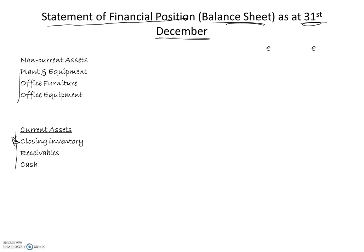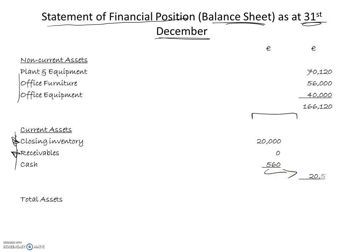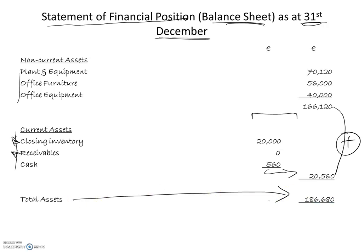All these items — the non-current assets and the current assets — are coming straight from the trial balance, with the exception of the closing inventory which is a note. I am simply going to list them, add them all up, and get a total asset figure. Plant and equipment 70,120; office furniture 56,000; and office equipment 40,000 — giving a total of 166,120. Stepping in for current assets: closing inventory 20,000; receivables nil; and cash 560. Adding those up, lining them underneath the non-current assets, and adding the two together gives a total asset figure of 186,680.